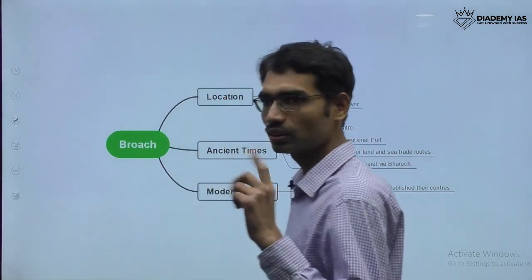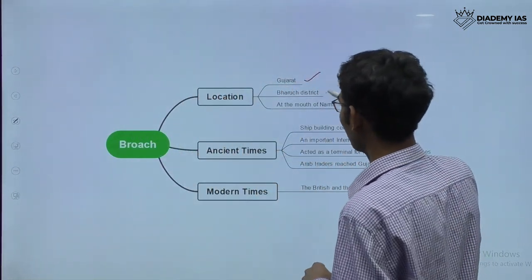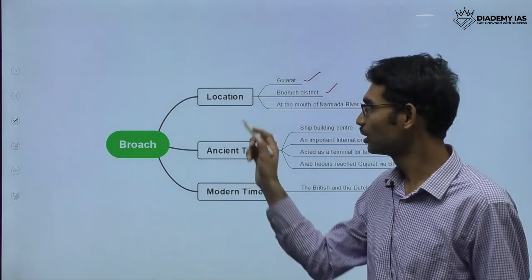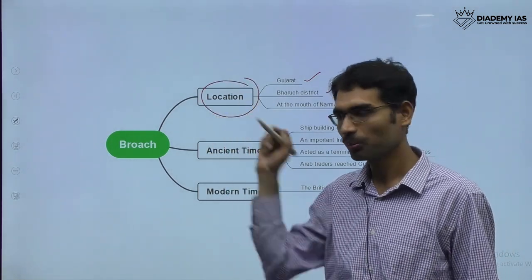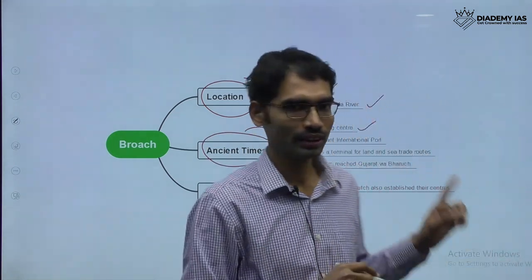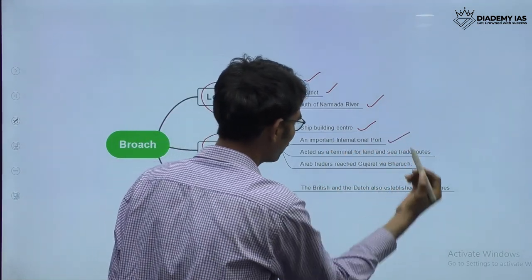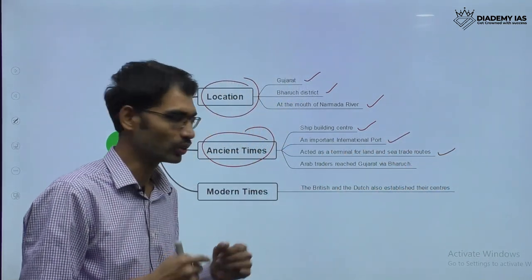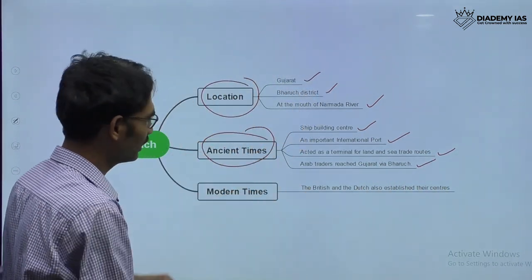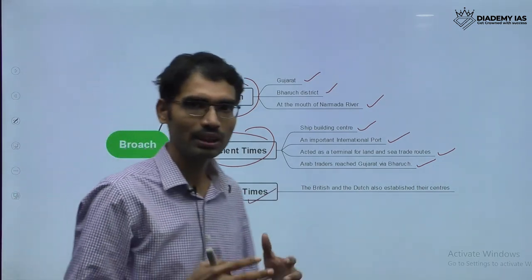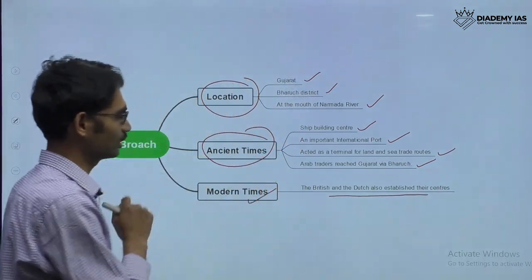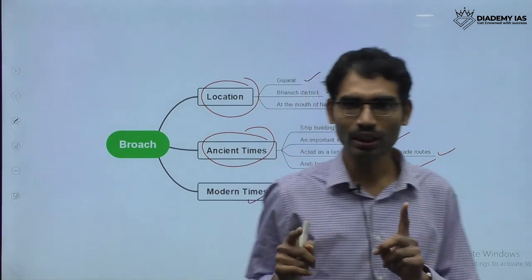Brooch is located in Gujarat, in the Brooch district, at the mouth of the Narmada River — these become location-related points. In ancient times it is an important shipbuilding center, international port, terminal for land and sea trade routes, and Arab traders reached Gujarat via Brooch. Even during medieval and modern times, British and Dutch people established their centers in this location.